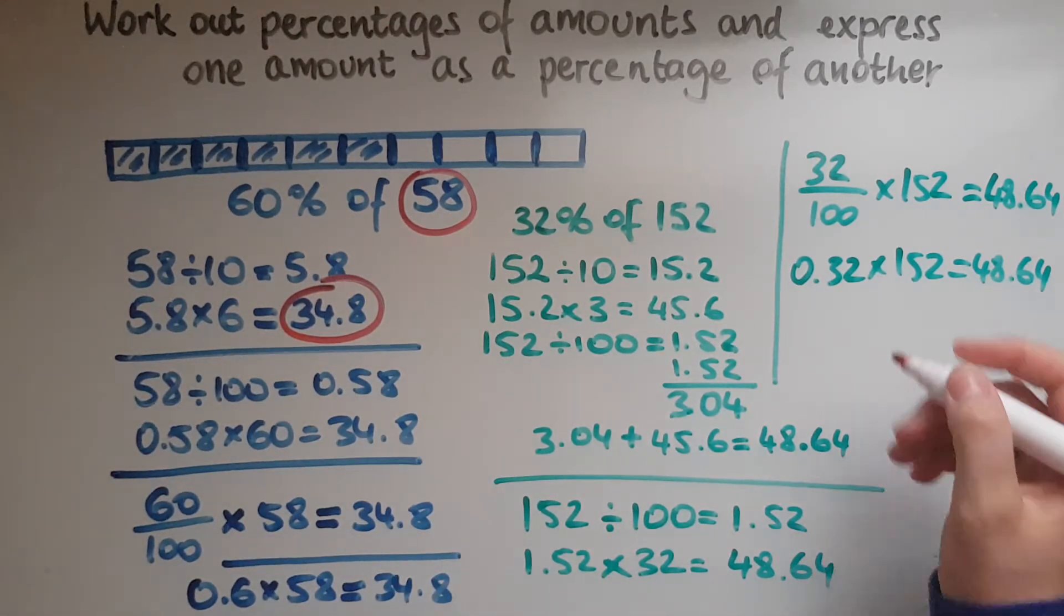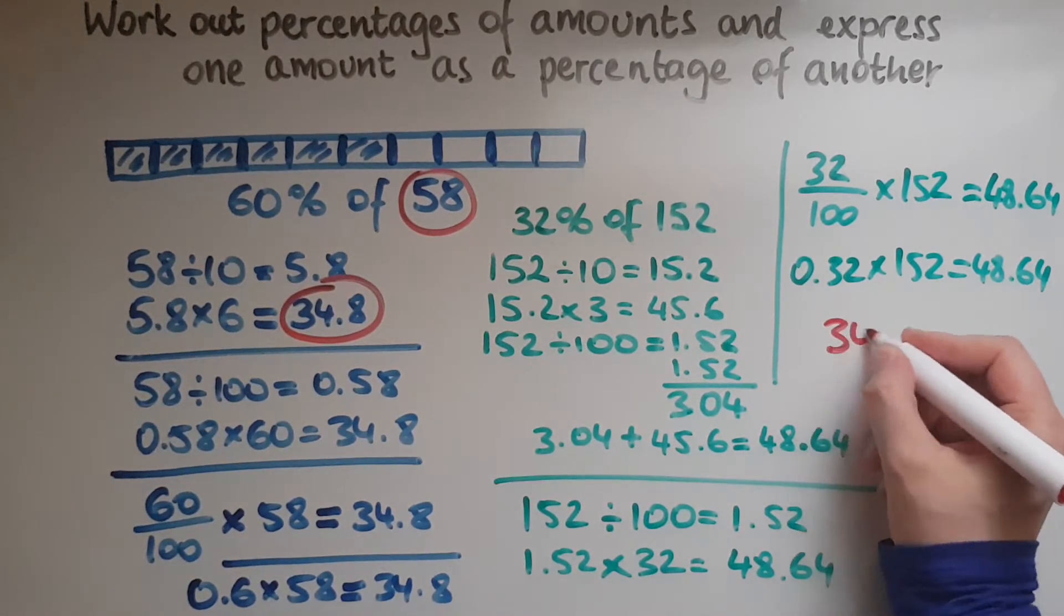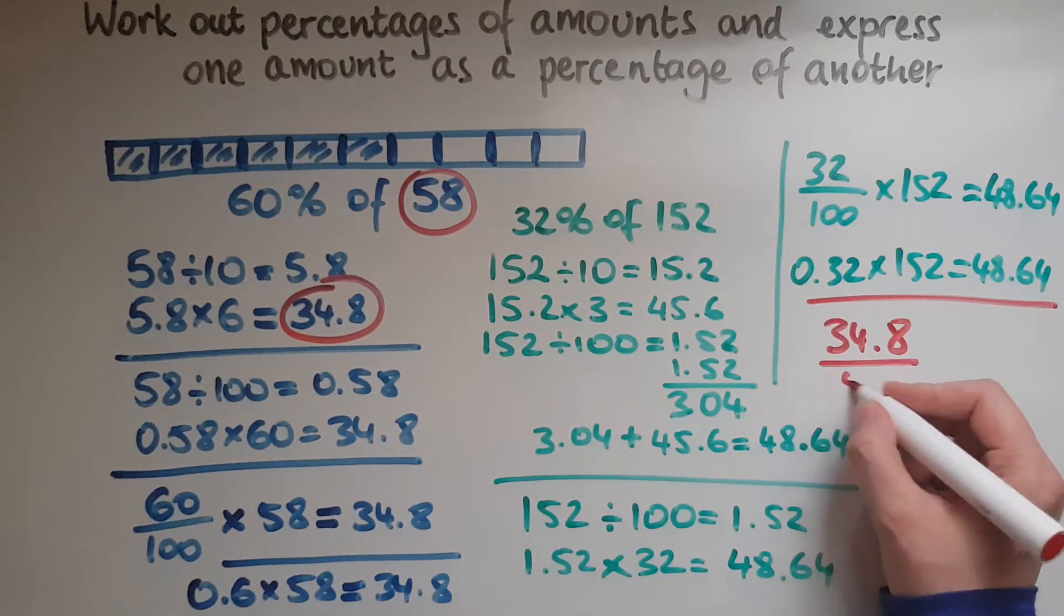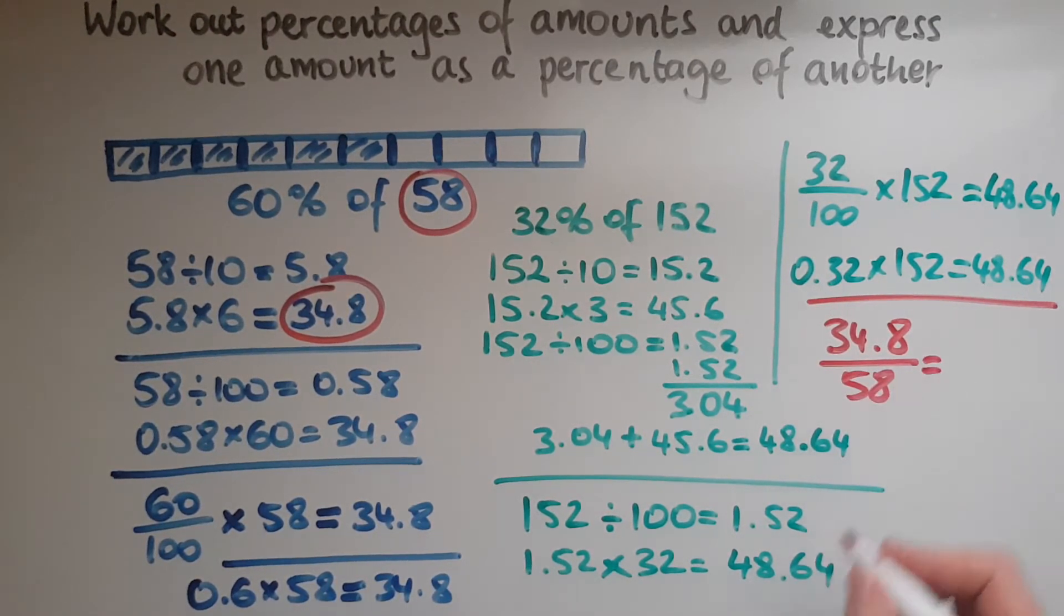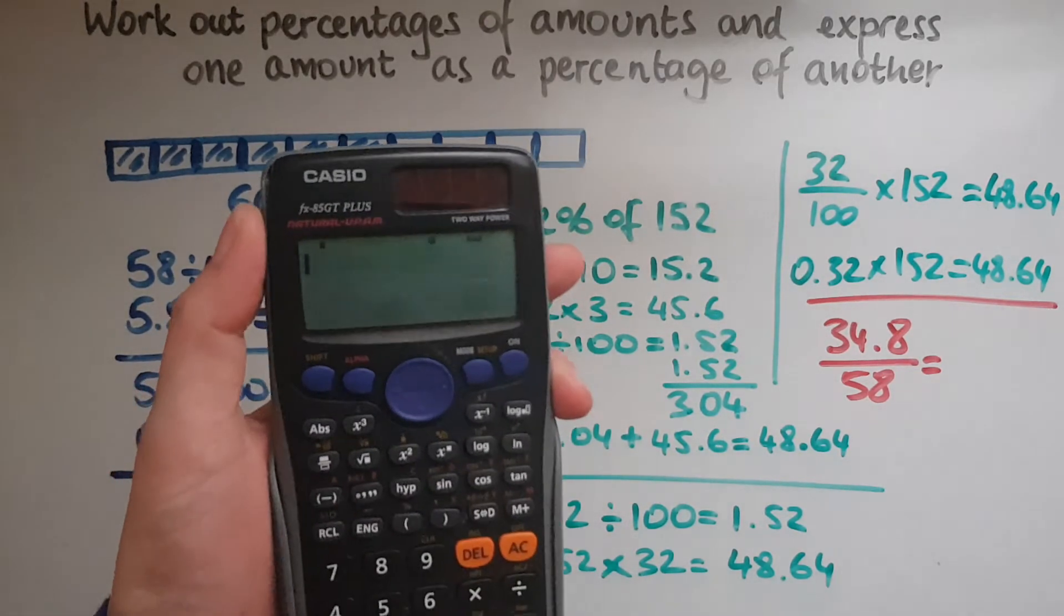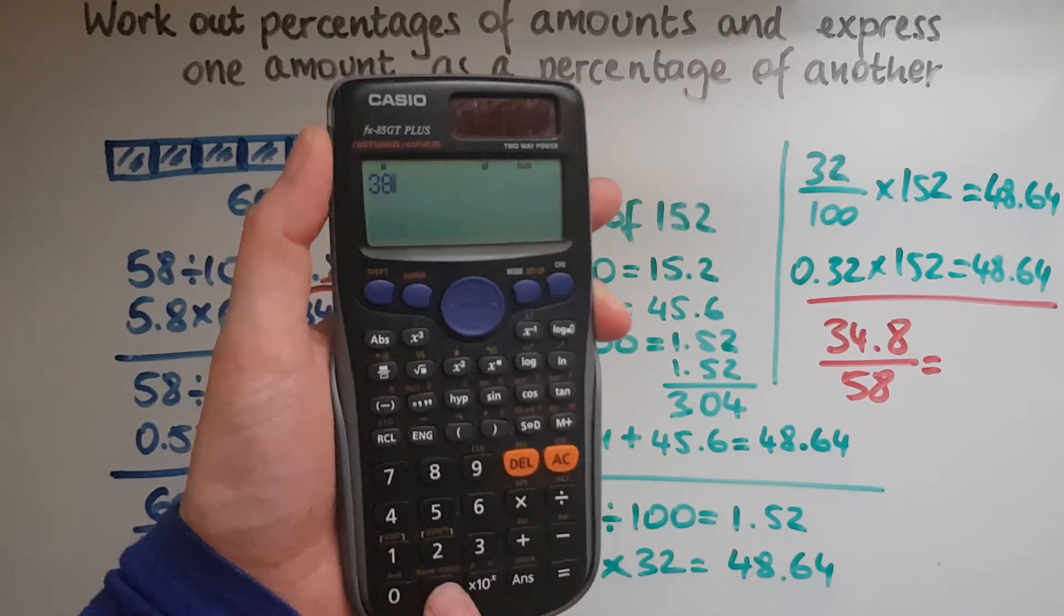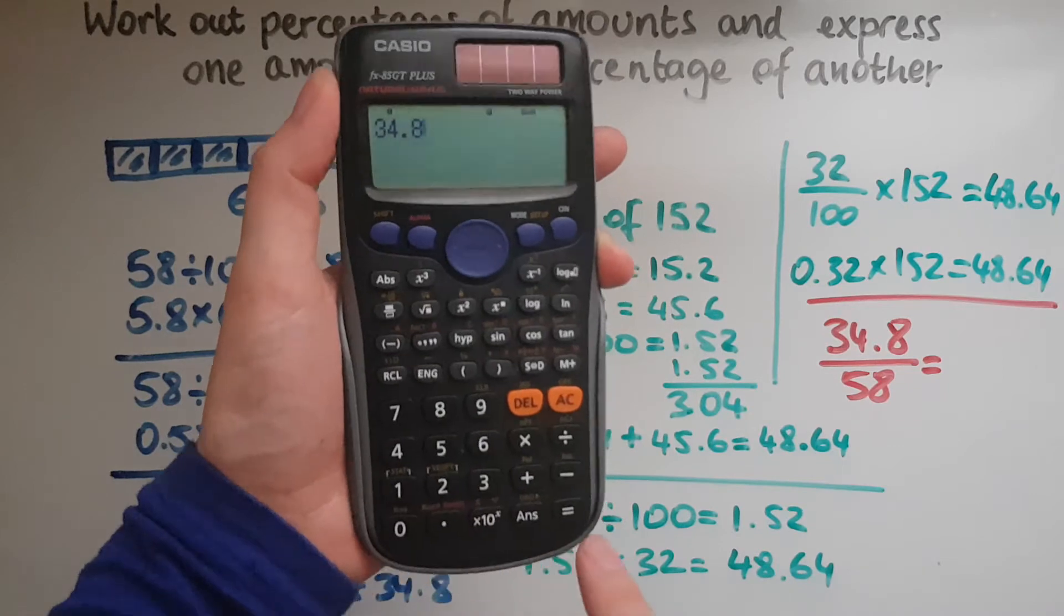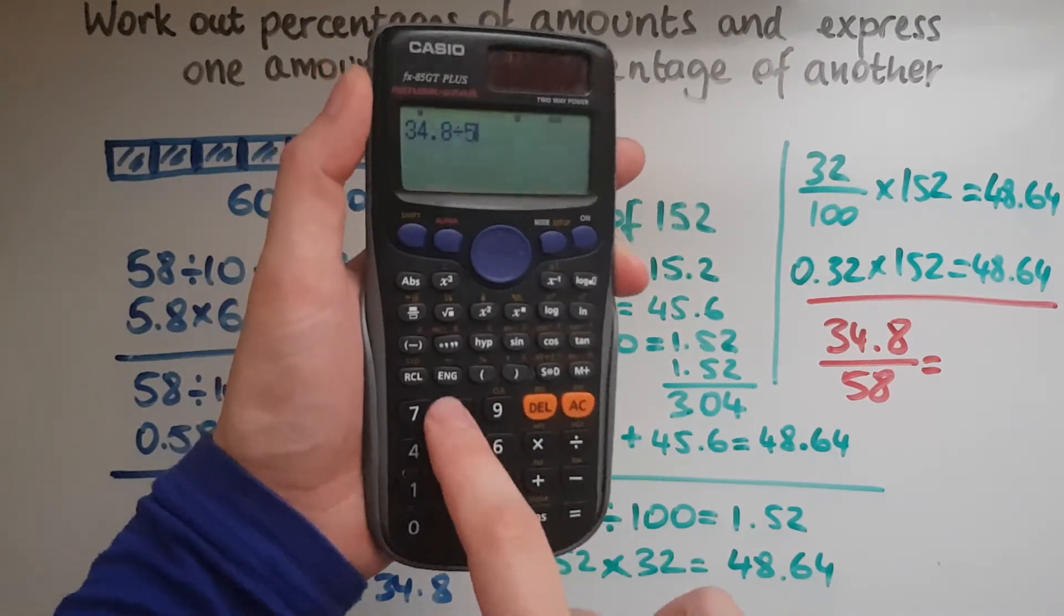So we write that as 34.8 out of 58. What does that give me? 34.8 divided by 58.